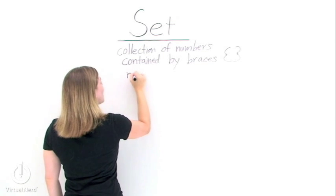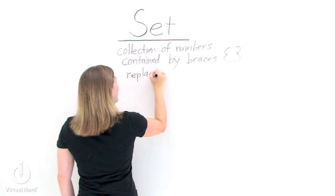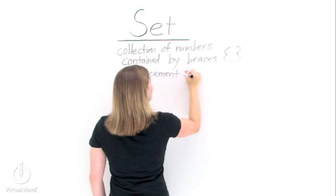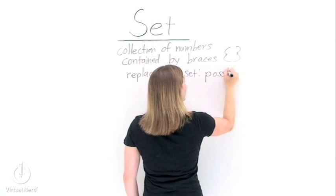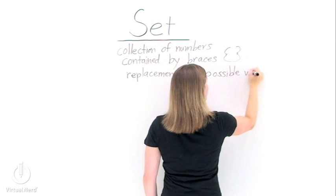Now, there are two types of sets. The first set is called a replacement set. That's the set you're usually given in a problem. This set contains all of the possible solution values for a particular variable.